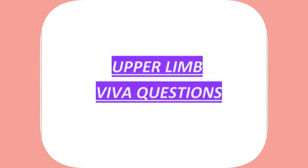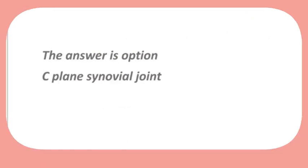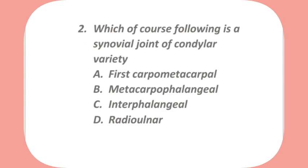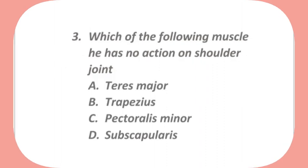Upper limb viva questions. The acromioclavicular joint is an example of: saddle joint, pivot joint, plane synovial joint, or condylar joint? The answer is option C — plane synovial joint. Which of the following is a synovial joint of condylar variety: first carpometacarpal, metacarpophalangeal, interphalangeal, or radio-ulnar? The answer is option B — metacarpophalangeal.